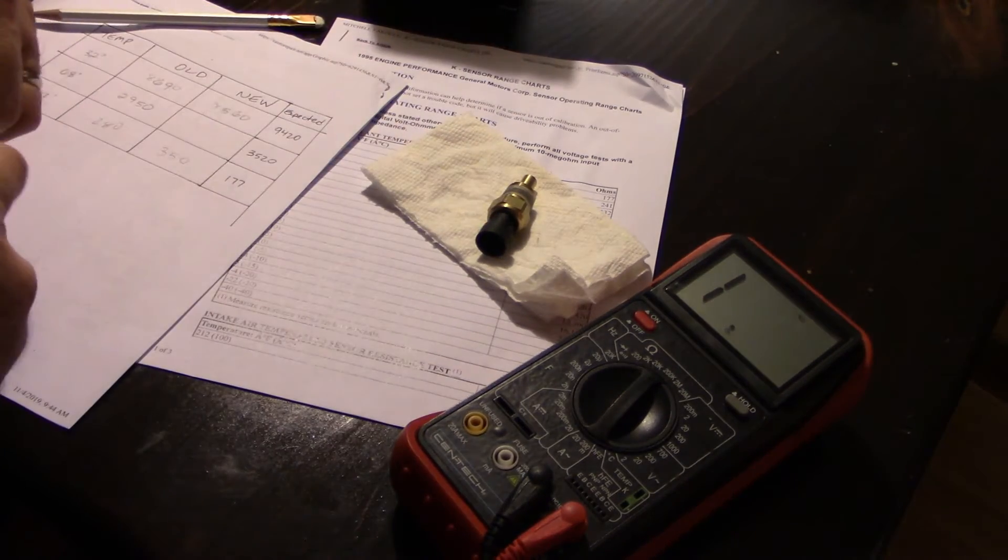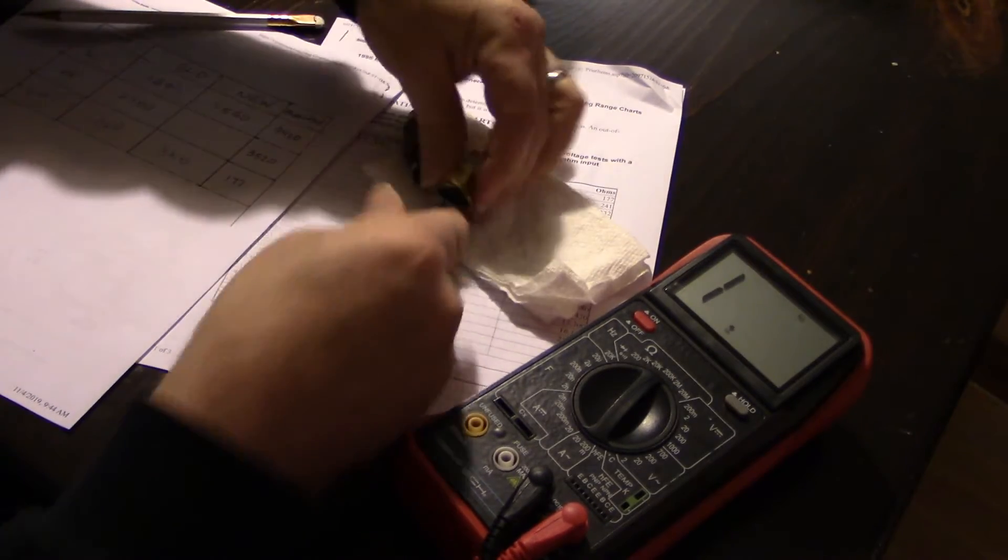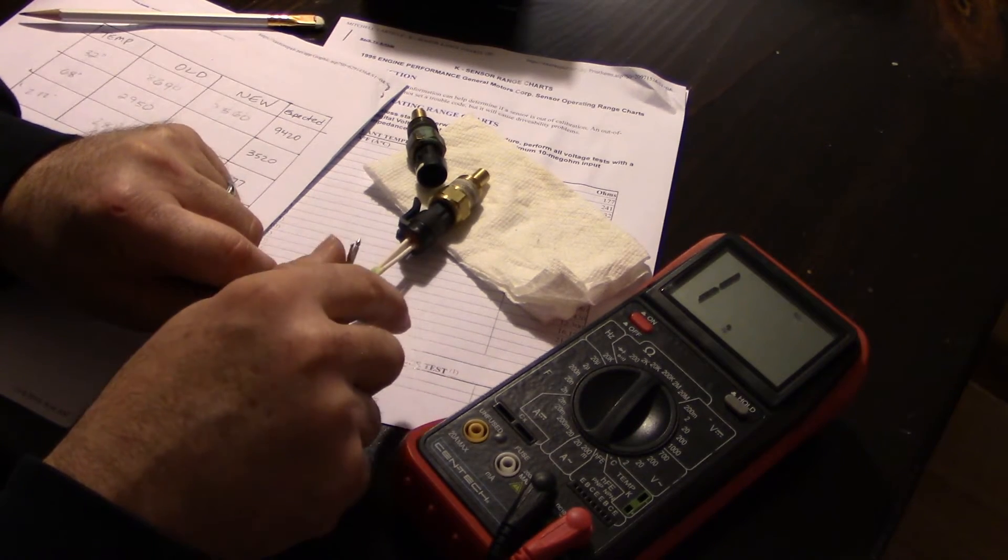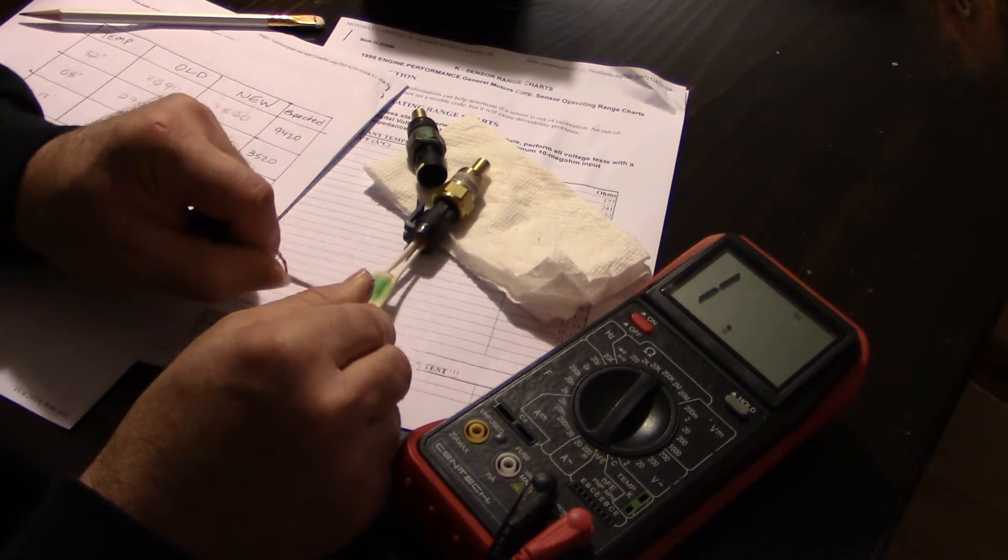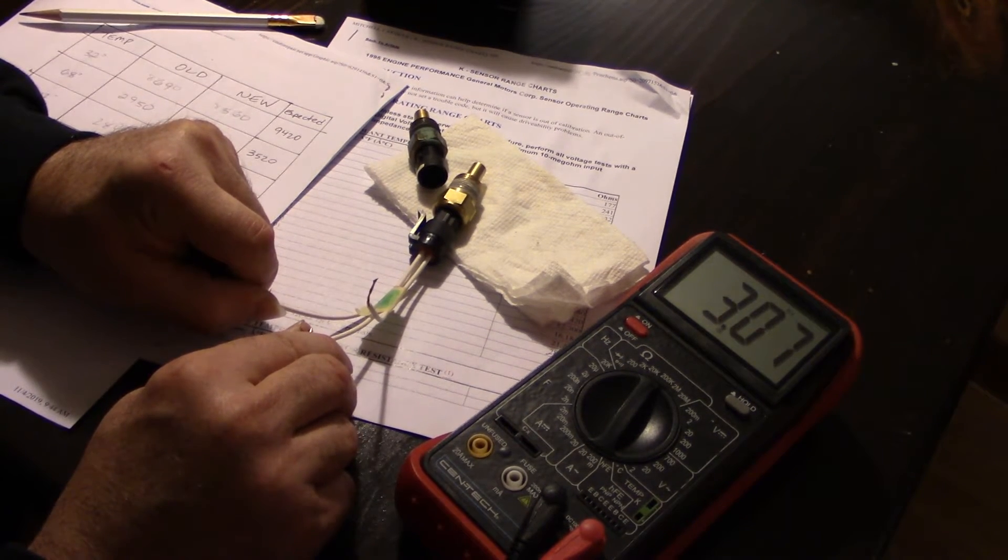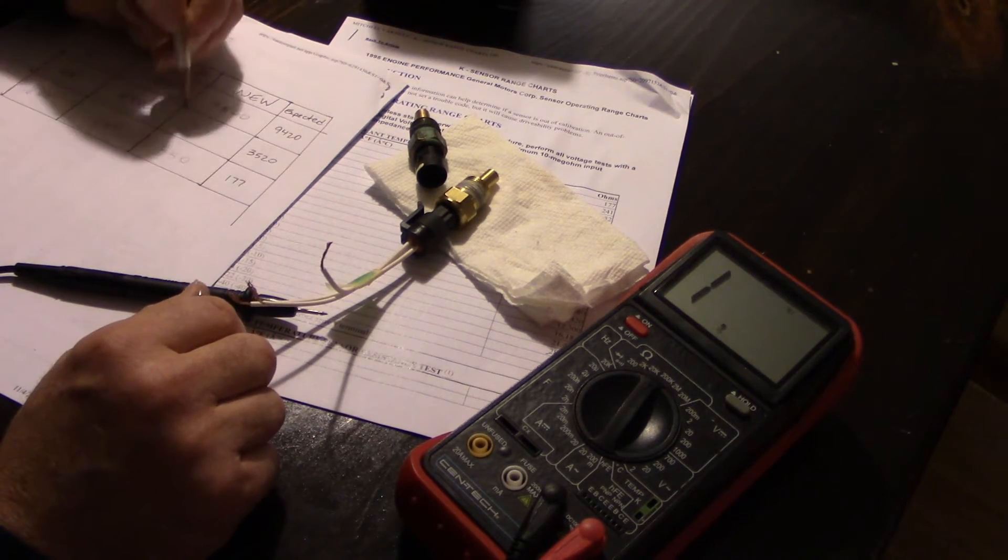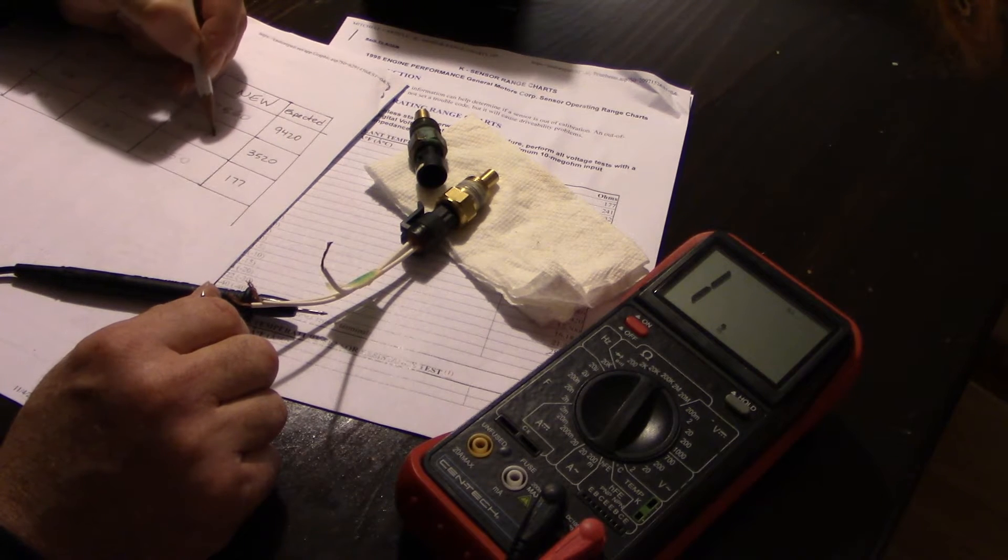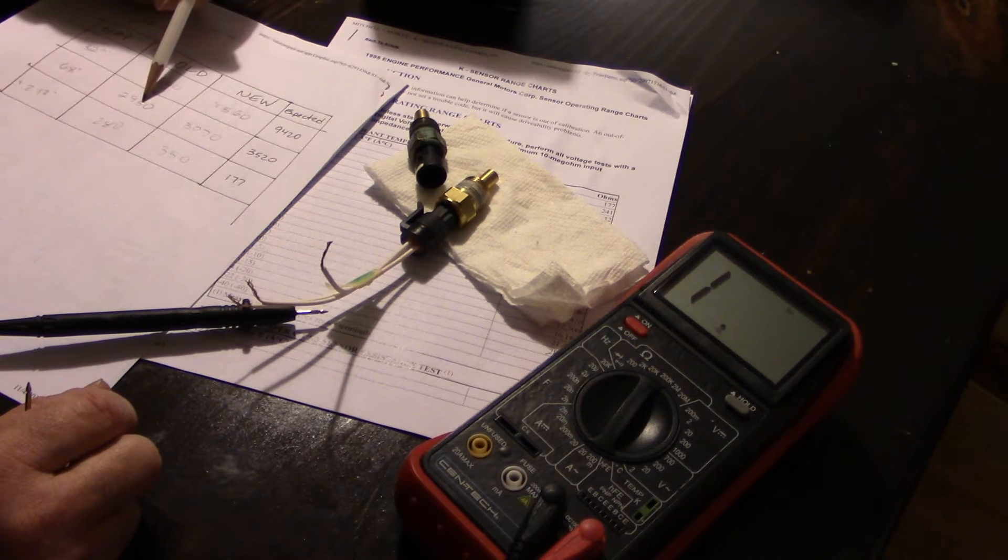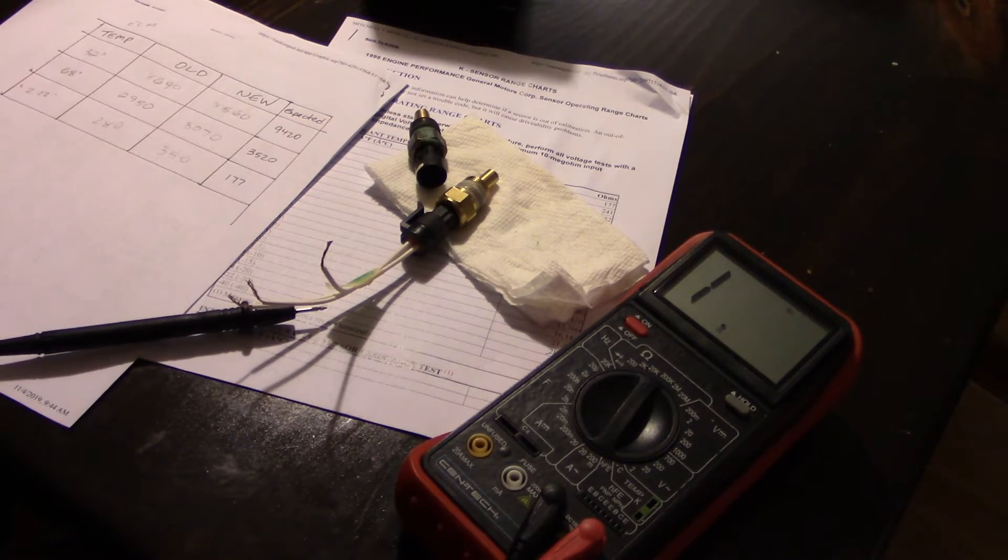Let's try the new one and see what we get. All right, 3070 ohms. So not a big difference between the old and new one at room temperature—2950 to 3070, not too much different at all.